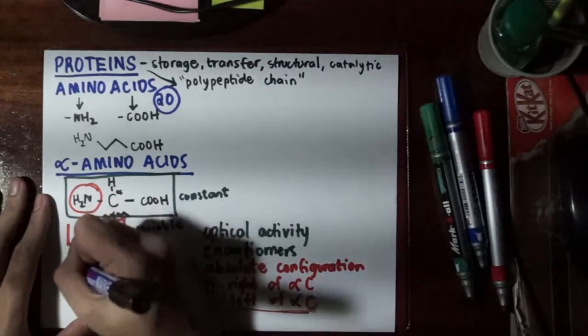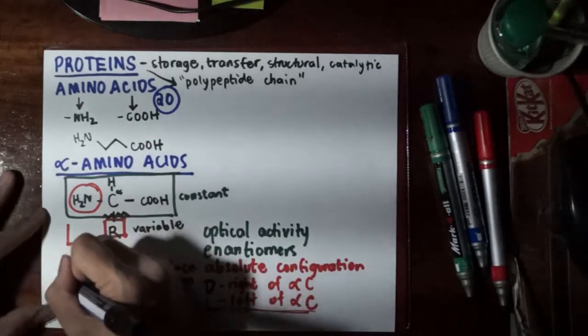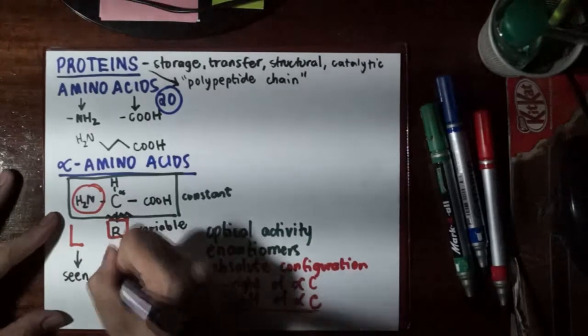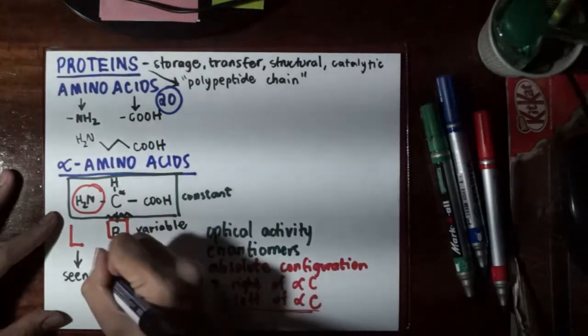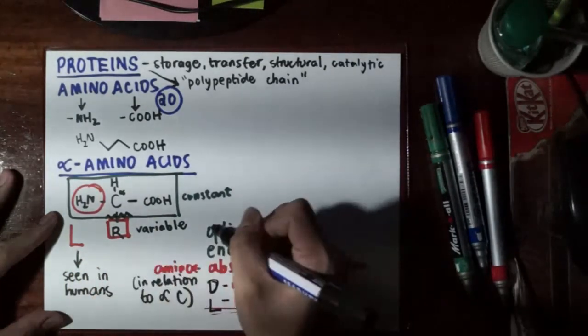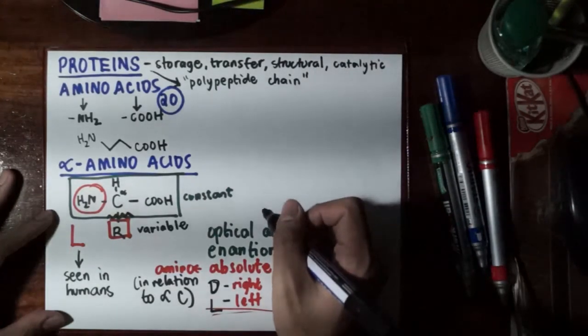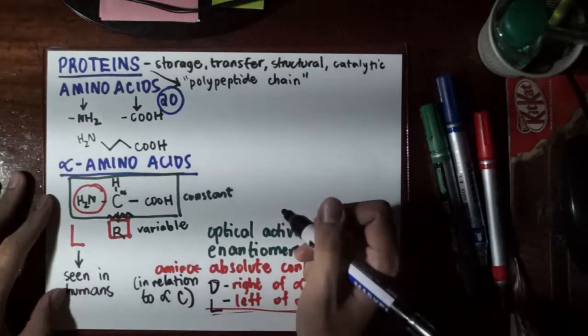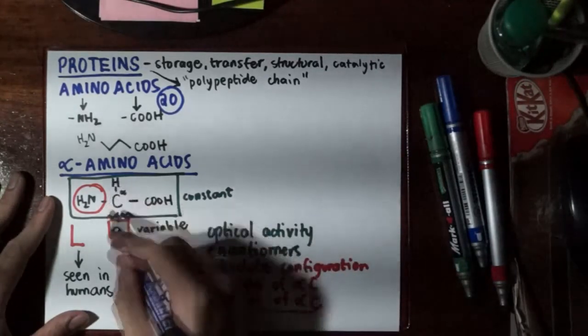I would like to note that the L configuration of the amino acids are the ones that are encoded for by the genes of human species, or by us. These are the ones we have. Rarely will we see amino acids in our bodies or in our proteins that are of the D isomer or of the D conformation.